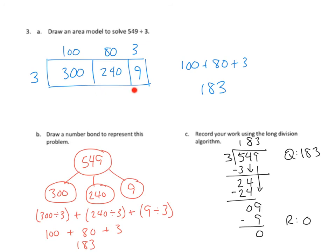We use an area model to break 549 down into the hundreds divisible by three, the tens divisible by three, and the ones divisible by three to figure out that our total of each of those parts is 183. We use a number bond to break 549 into those same parts, divisible by three in hundreds, divisible by three in tens, and divisible by three in ones.